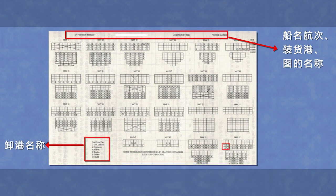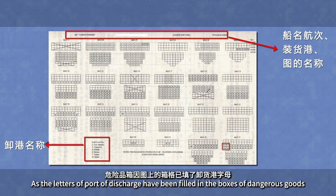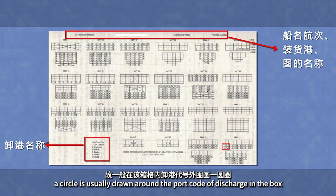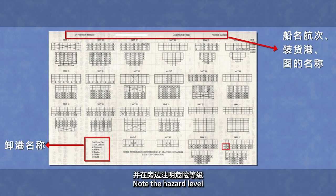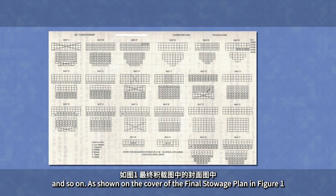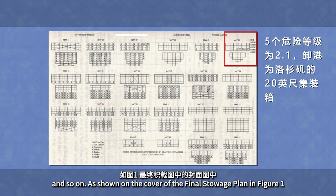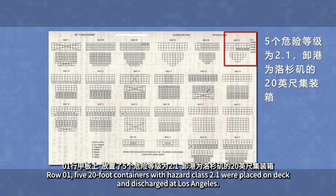冷藏箱在其卸港字母的右下角标注小号字体R。危险品箱因图上的箱格已填了卸货港字母，一般在该箱格内卸港代号外围画一圆圈，并在旁边注明危险等级，如第2.1、第3.2等。如图一最终积载图中的封面图，零一行甲板上放置了5个危险等级为2.1、卸港为洛杉矶的20英尺普通箱。